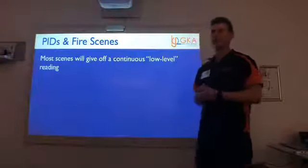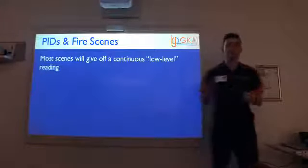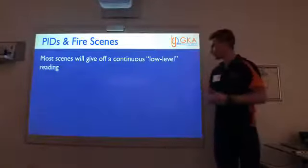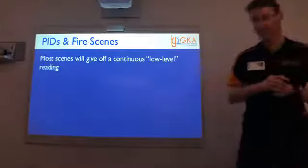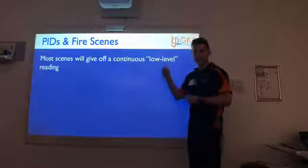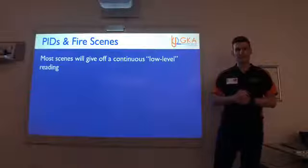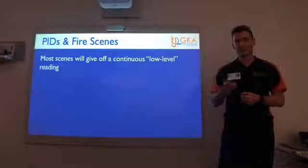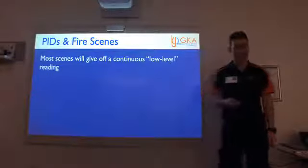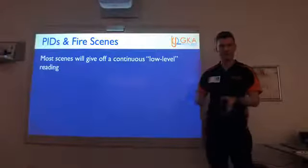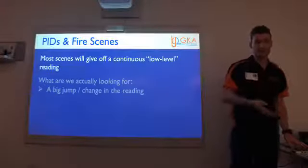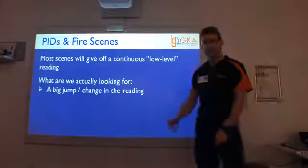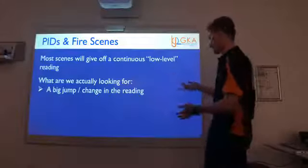So what I'd expect is that going into almost any fire scene, there's going to be some reading on the PID almost constantly — just from the stuff that's burned. How low level is that, though? I put 'low level' in inverted commas, because the PID is very sensitive and what it's picking up is quite a high amount of background. When walking through a scene, if that's the level we're constantly looking at, we're going to think, 'Well, that's the low — that's natural to this scene.' So what are we actually looking for? What we're looking for is some sort of big jump or change in the PID that might indicate something different is here.